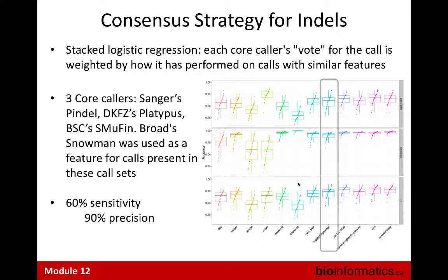For indels it's a little more complicated. If you pick indels from any two algorithms and try to overlap them, the overlap is probably only 50% — indels are tough to call accurately. In this case we had to use a machine learning algorithm, specifically logistic regression, feeding in genomic features so that one pipeline may be given a larger weight if it is better at calling variants with specific features. By using different weights against genomic features, we managed to get 60% sensitivity and 90% precision. Indels are just tougher to call than SNVs.